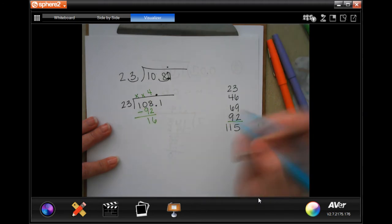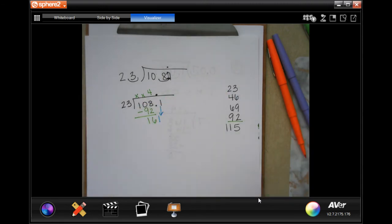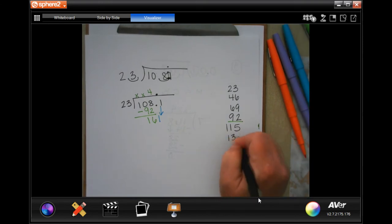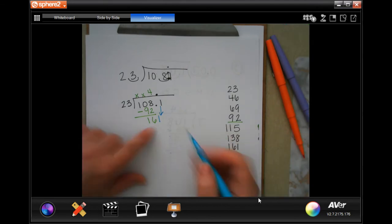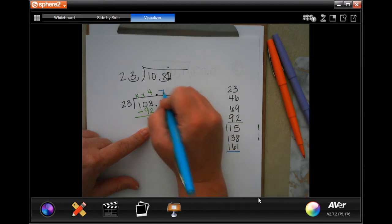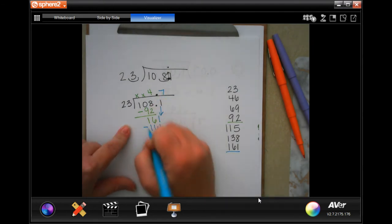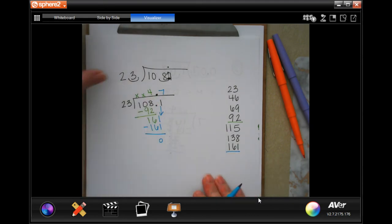16 is smaller than 23. So I'm going to go ahead and bring down that one. So maybe I will have to go a little bit further. So then we have 161. So that's going to be one, two, three, four, five, six, seven times. And that will be 161 subtract and get zero. So my answer then is 4.7.